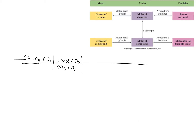Now I have moles of CO2 on top, so I write moles of CO2 on the bottom and apply the subscript conversion factor. I want moles of carbon, so I look at the subscript for C — it's one. In our subscript conversion factor, it's always one mole of the compound. Then I move on to molar mass: moles of carbon on top means moles of carbon goes on the bottom, and we convert to grams of carbon — 12.0 grams of carbon in one mole of carbon from the periodic table.